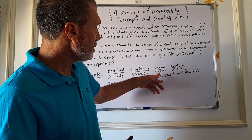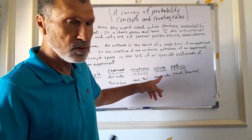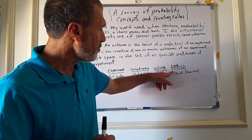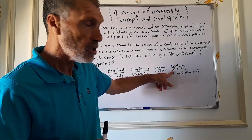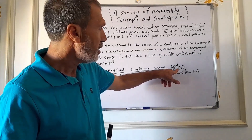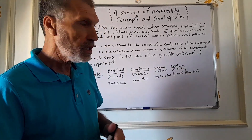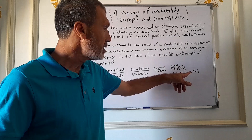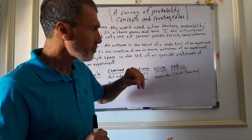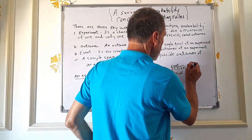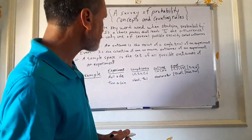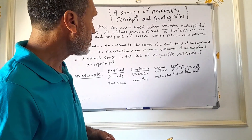An event can consist of one outcome — for instance, rolling a one — or it could be the odd numbers when rolling a die, namely one, three, and five. Another event could be the even numbers when rolling a die, namely two, four, and six.